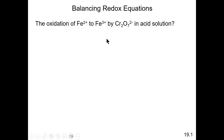So the question here, for an example, is that you're given the fact that Fe2+, iron 2, would be oxidized to iron 3 by using the dichromate ion, Cr2O7 2-.